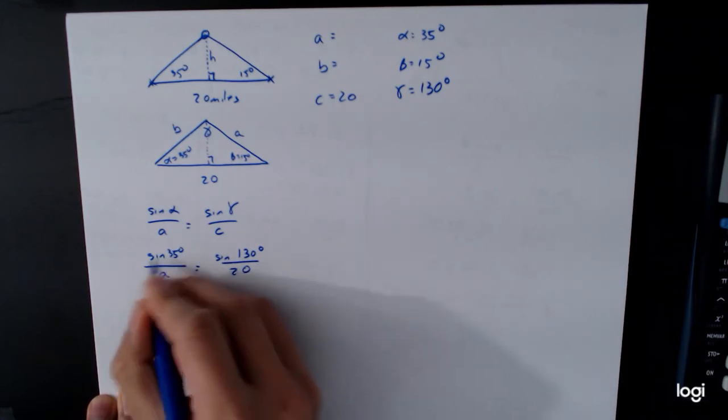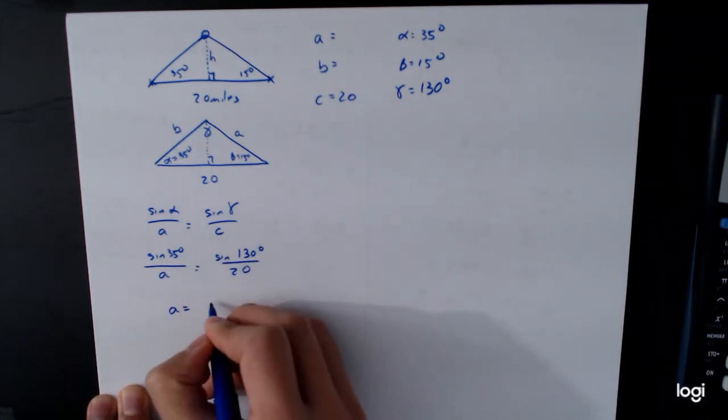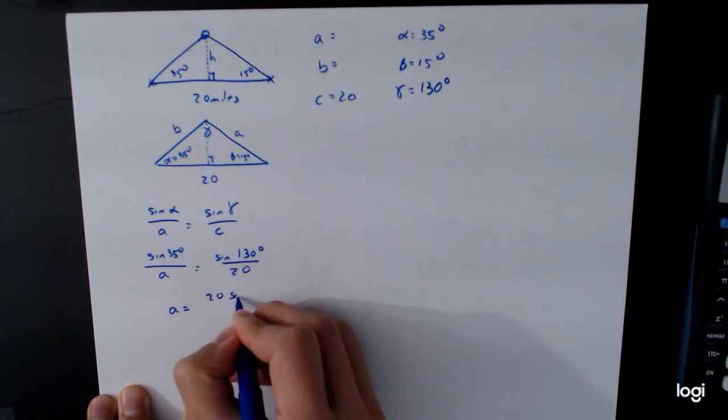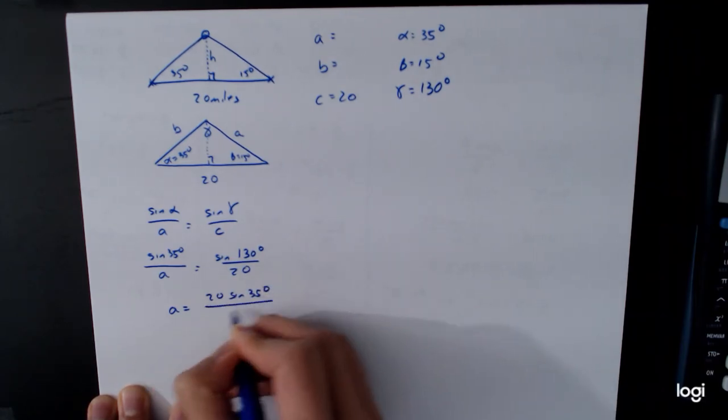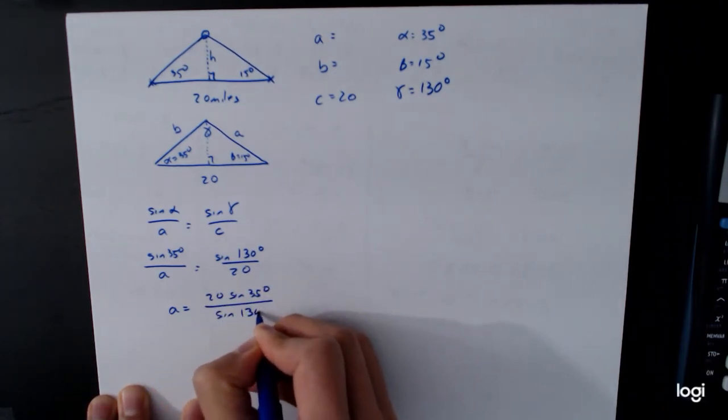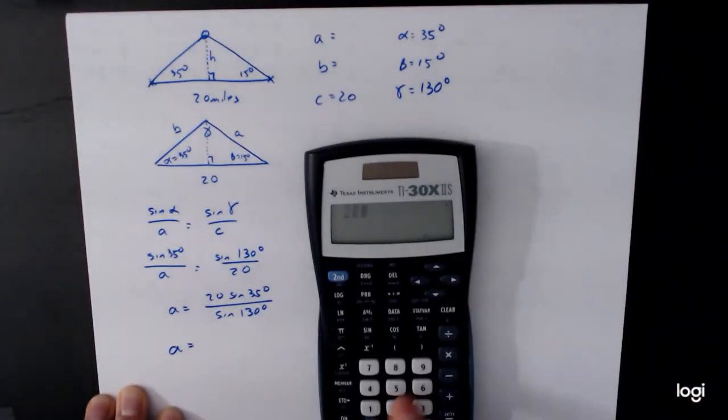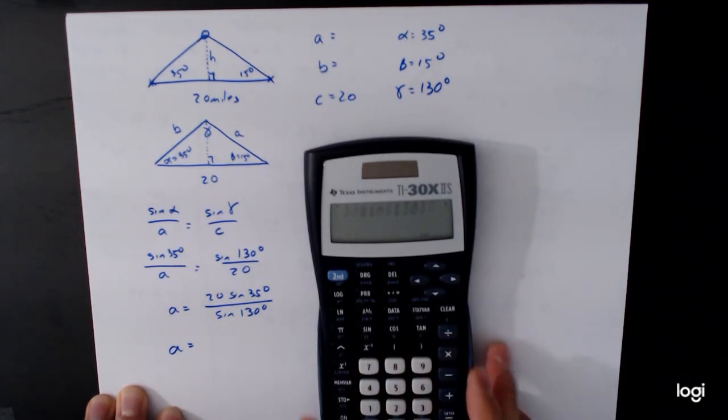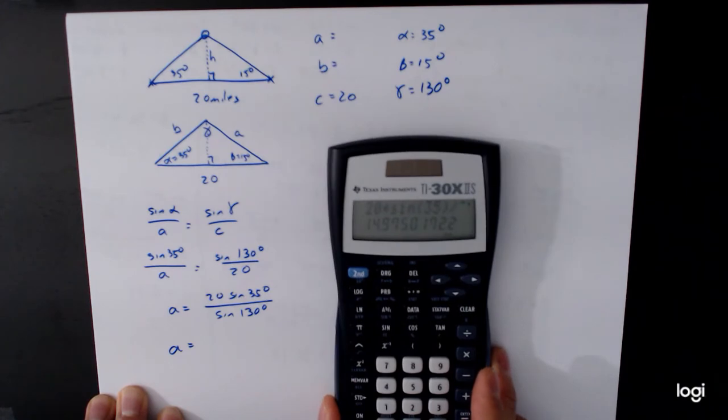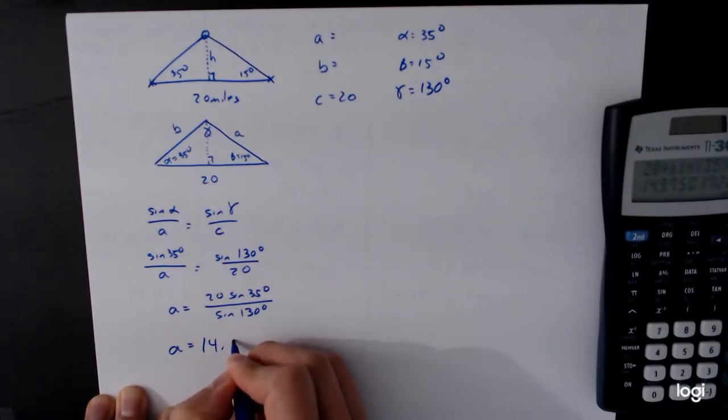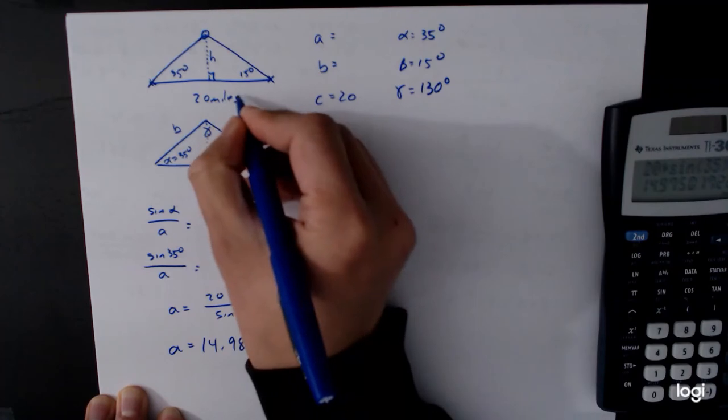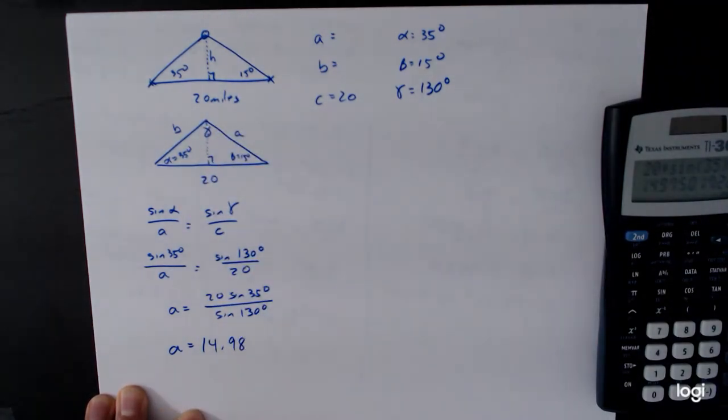Move the terms around, multiply, cross multiply, and do all that stuff. 20 sin of 35 degrees over sin of 130 degrees. So that value of a is equal to 20 times sin of 35 divided by sin of 130. 14.98. So 14.98. And again, units are miles. So this is in miles.